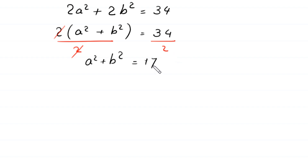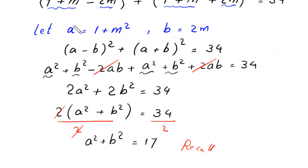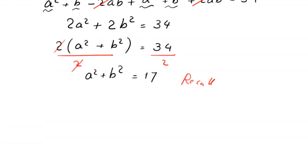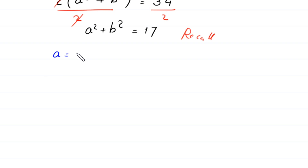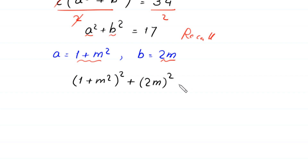Dividing both sides by 2, the 2 cancels and we are left with a squared plus b squared equals 17. Recalling that a equals (1 plus m squared) and b equals 2m, we substitute back: (1 plus m squared) whole squared plus (2m) whole squared equals 17.